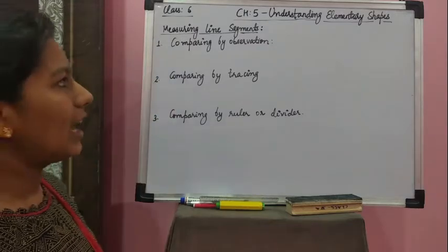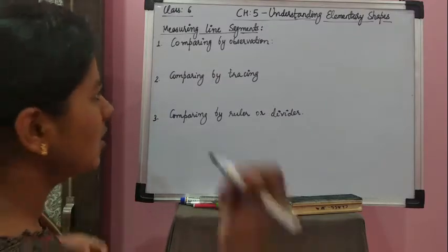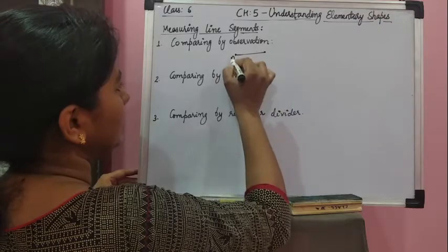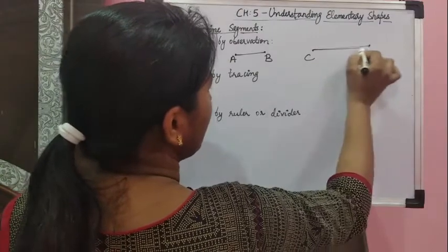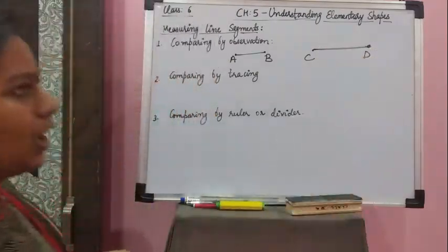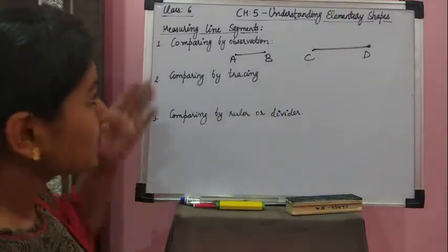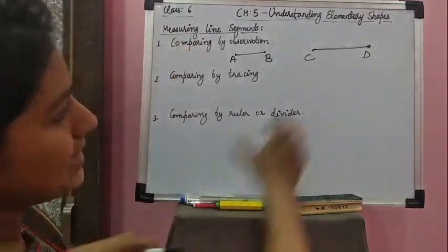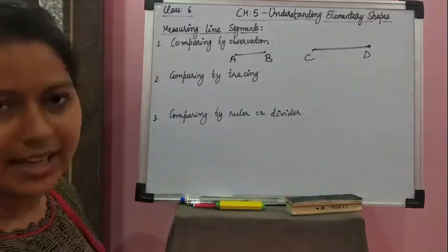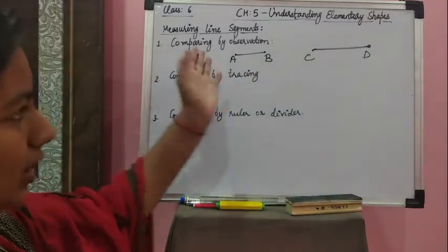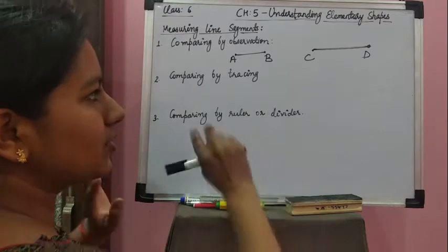The first technique is comparing by observation. Observation is simply by visualization. Suppose I am drawing line segment AB and one more line segment CD. The question is which line segment is bigger or which one is smaller. You can easily say simply by observation that CD seems quite bigger than line segment AB, because there is a very large difference between them.